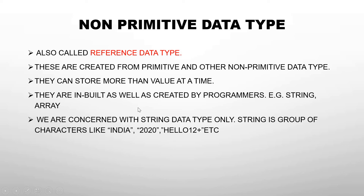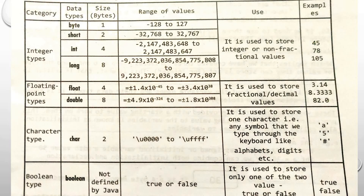In non-primitive data types, there are categories like String, array, and interface, but in this course we are concerned only with String. A String is a group of characters — for example, 'India' has five characters and '2020' has four characters. A String can include alphabets, digits, or any symbol, and is always represented within double quotes.